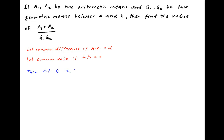The arithmetic progression will therefore be: a as the first term, a plus d as the next term, then a plus 2d, and finally a plus 3d. The last term, a plus 3d, is equal to b, and the arithmetic means between a and b are a1 and a2 respectively.